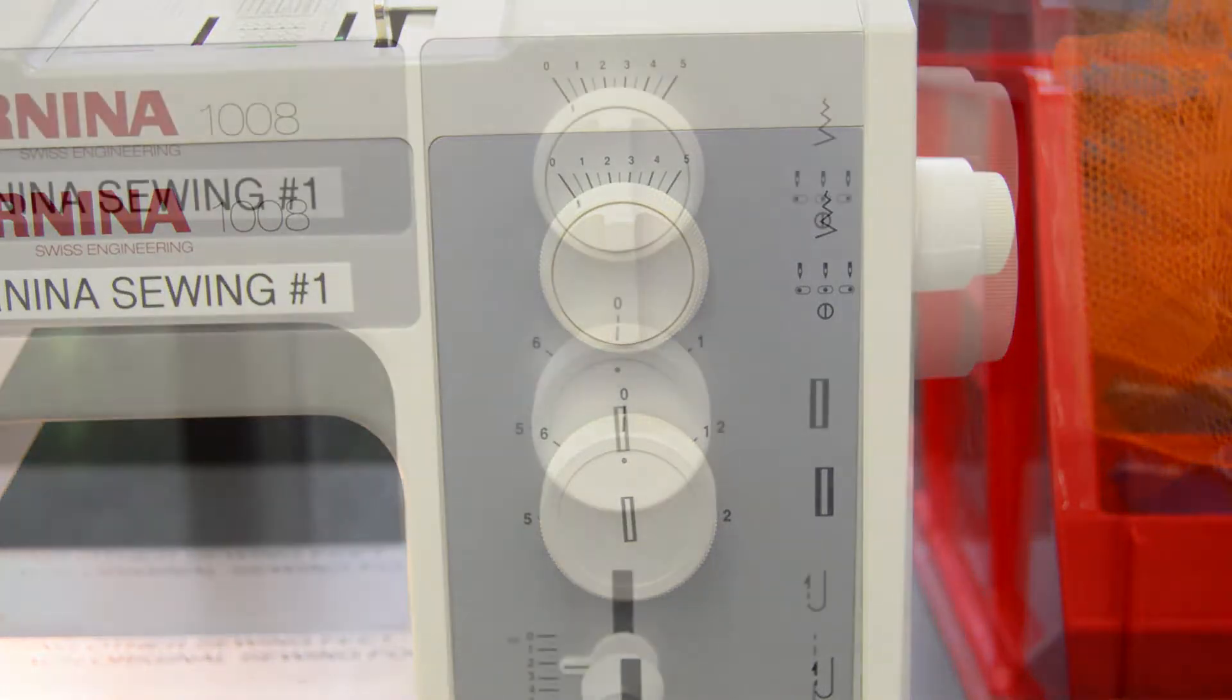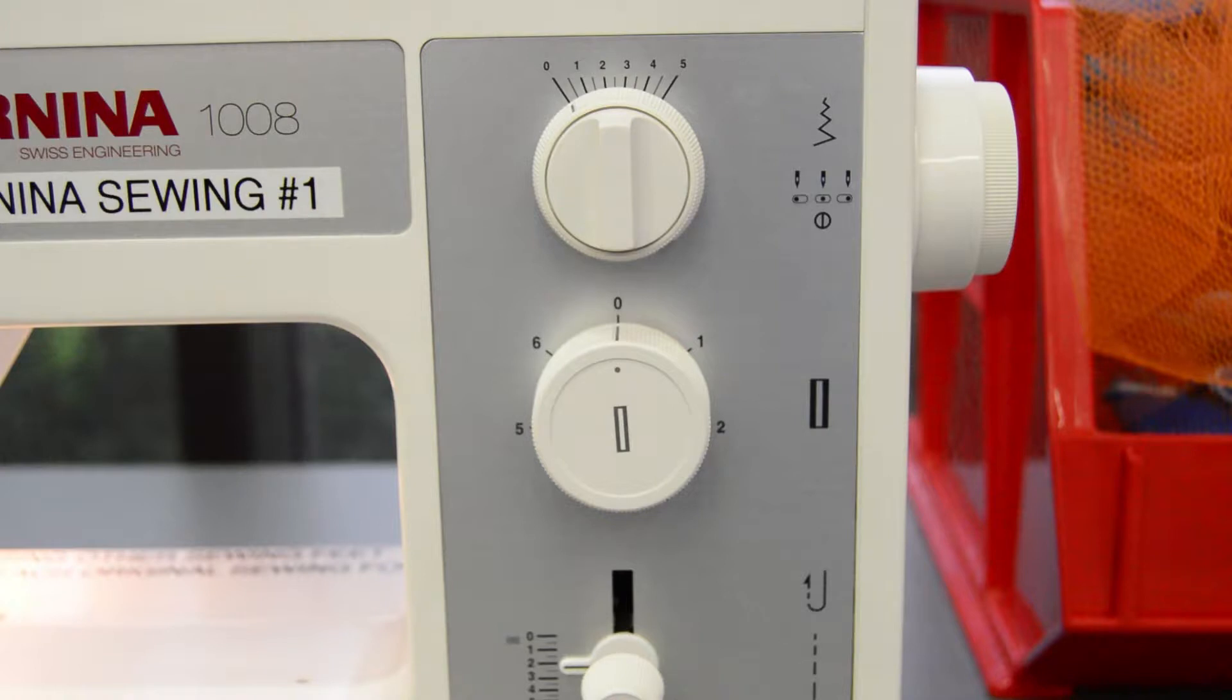The next knob down is the buttonhole knob. You can turn this to proceed to different stages of buttonhole sewing. You'll want to read the startup guide for more information.